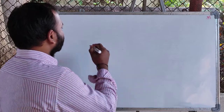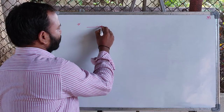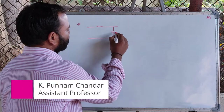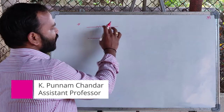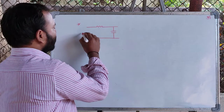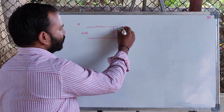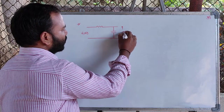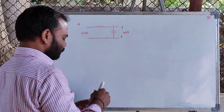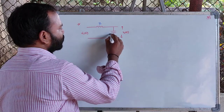A first-order analog low-pass filter is given here. This is the first-order RC filter that is a low-pass filter. We are going to give the input Vi(t) and get the output — the filtered output — across the capacitor. The resistance value is R and the capacitance value is C.